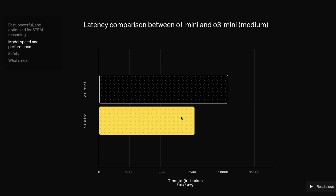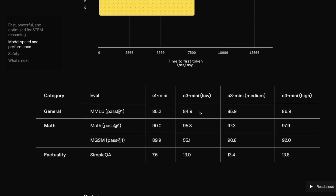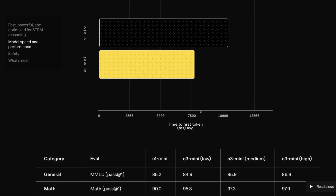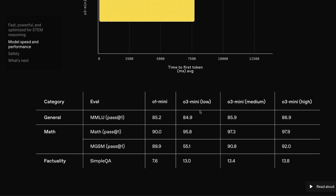In terms of latency, you can compare O1 mini and O3 mini medium. O3 mini low would be much faster, and O3 mini high would be slower. I think they've found the sweet spot with O3 mini medium — you're getting a model that is both faster and better than O1 mini, and it also comes in different flavors, especially useful for developers who can offer three different tiers to their customers.